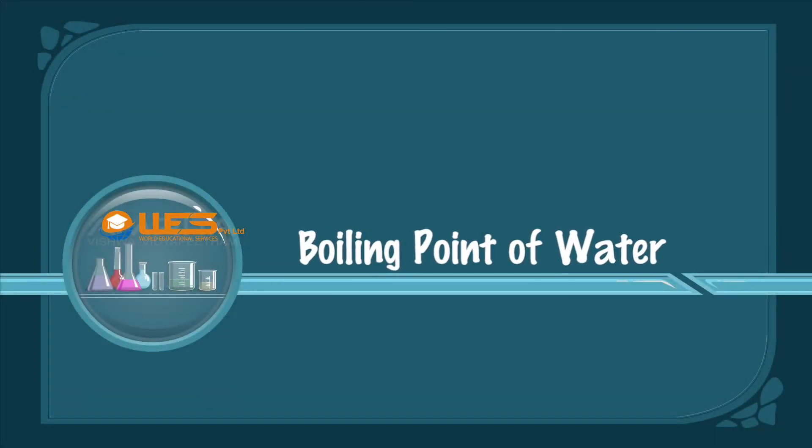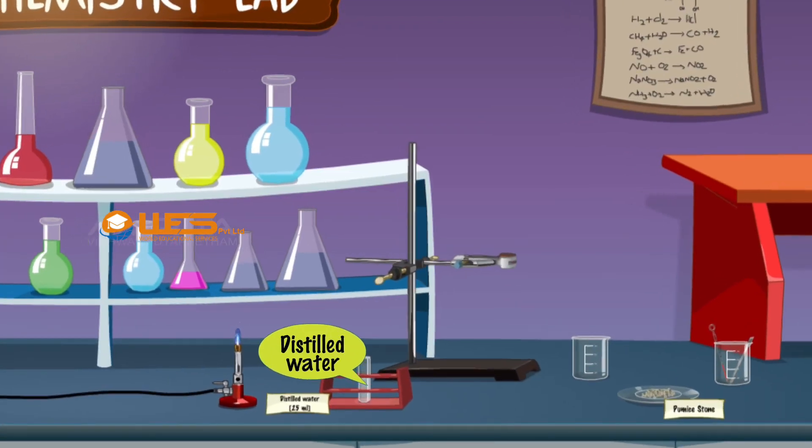Boiling Point of Water. We require distilled water, a boiling tube, beakers, a thermometer, a spatula, pumice stones, a stand with a clamp, and a Bunsen burner.